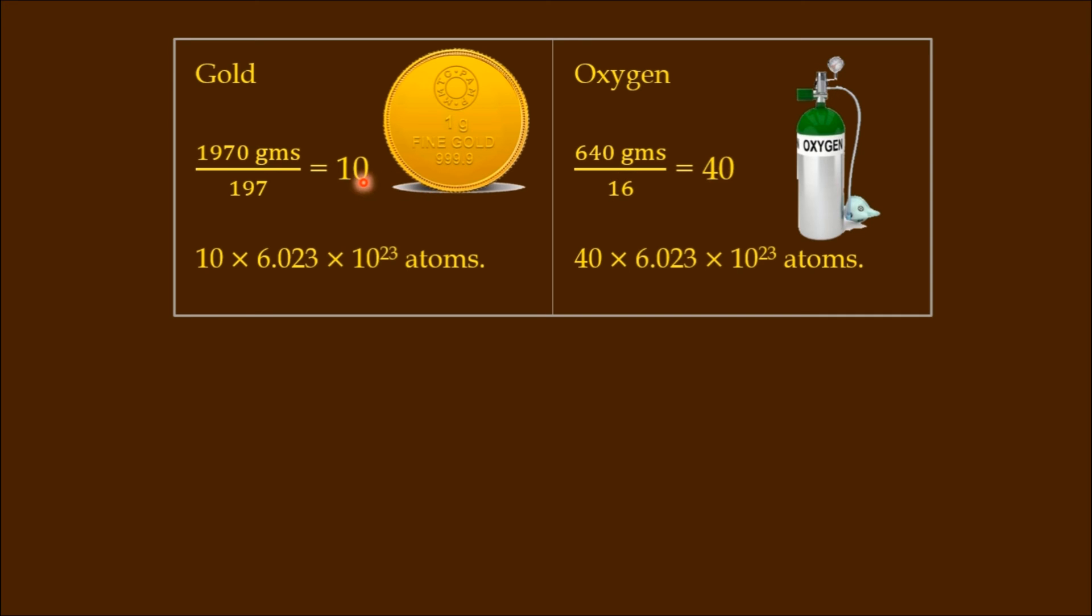10 gram atoms of gold, 40 gram atoms of oxygen. So among these, which has more number of gram atoms? Oxygen has more number of gram atoms - 40. 1 gram atom contains Avogadro's number of atoms.